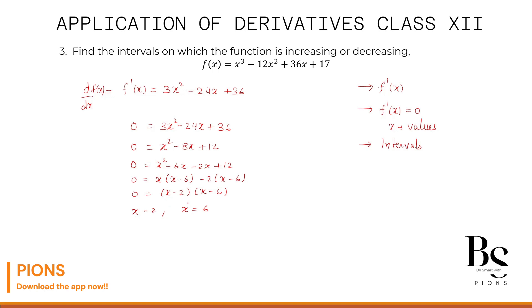We got two values of x. Draw the number line with -∞ on one end and +∞ on the other, and mark the points 2 and 6. This gives three intervals: (-∞, 2), (2, 6), and (6, +∞). There is a shortcut method, but for board exams it's better to follow the simple technique: choose a random number in each interval and substitute it into f'(x).